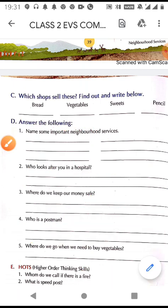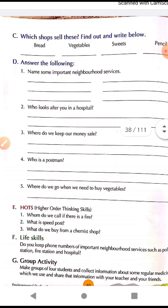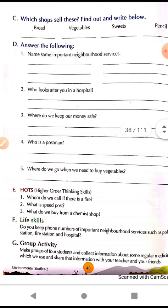Now the question answers. Question one: name some important neighborhood services. Answer: some important neighborhood services are school, market, hospital, bank, police station, and post office. Besides these, there are many other neighborhood services also.